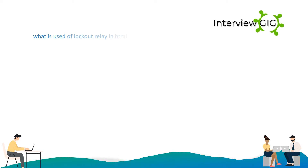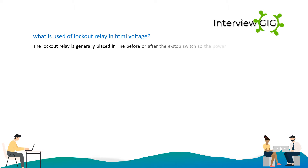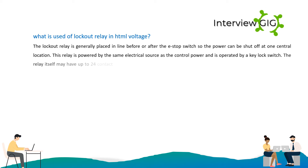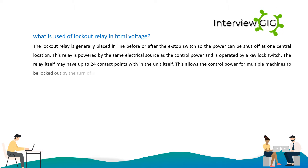Explain the use of a lockout relay in high voltage systems. The lockout relay is generally placed in line before or after the E-stop switch so the power can be shut off at one central location. This relay is powered by the same electrical source as the control power and is operated by a key lock switch. The relay itself may have up to 24 contact points, allowing control power for multiple machines to be locked out by the turn of a single key switch.